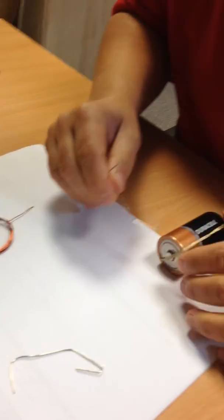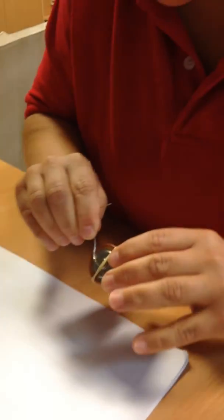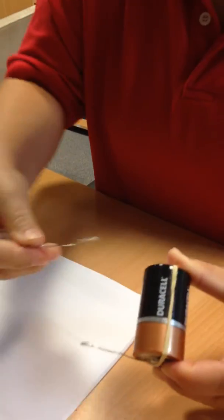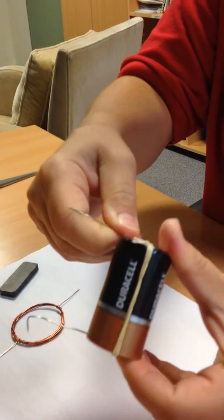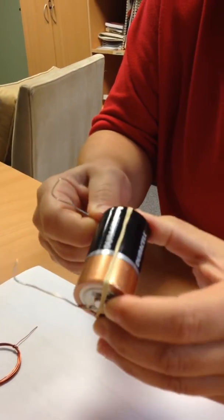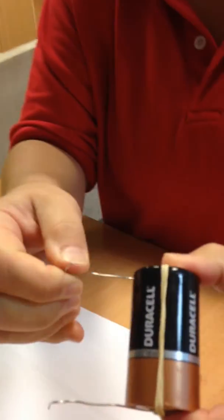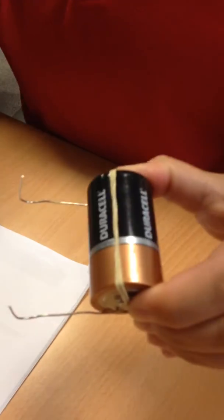and you're going to put one paper clip around the positive terminal underneath the rubber band. It's easiest if the rubber band is there first. The second paper clip underneath the negative terminal. Again, it's easier if the rubber band is there first.